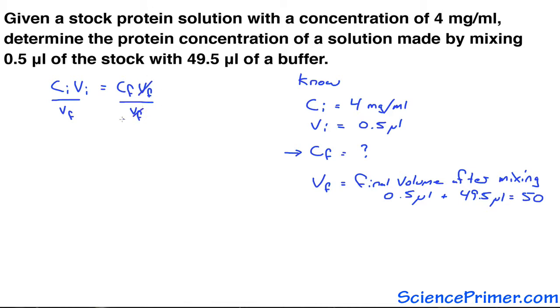Final volume cancels from the one side, isolating Cf, final concentration, giving the equation Cf equals Ci times Vi divided by Vf.